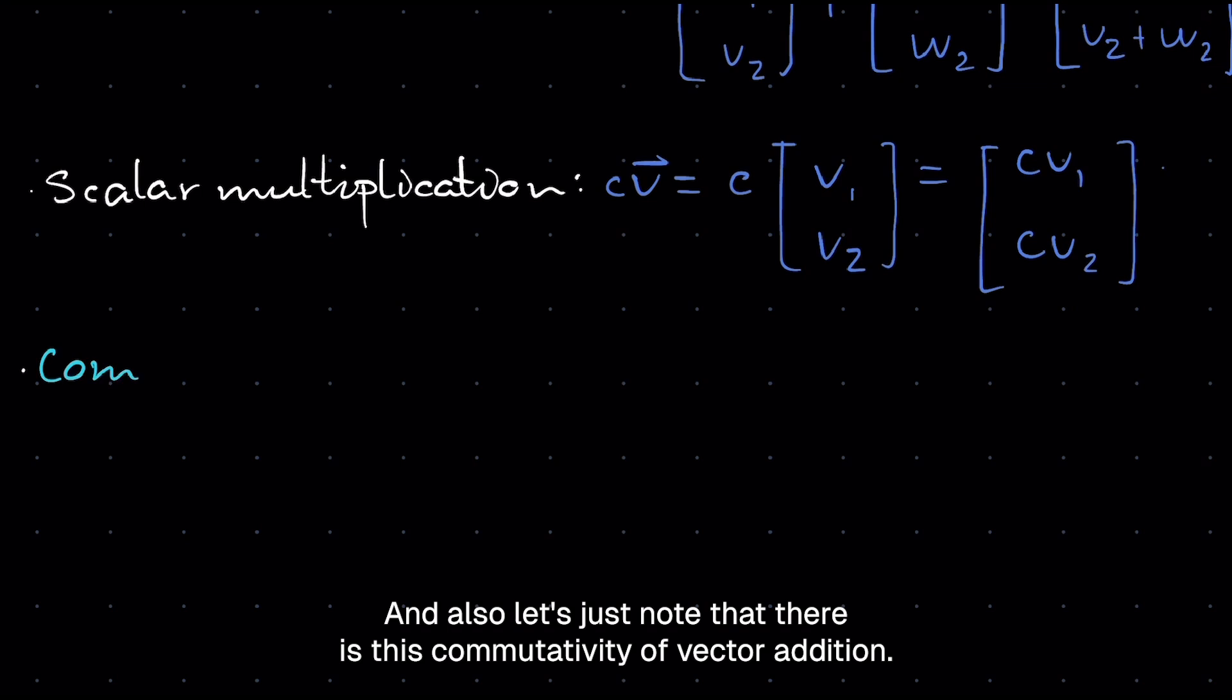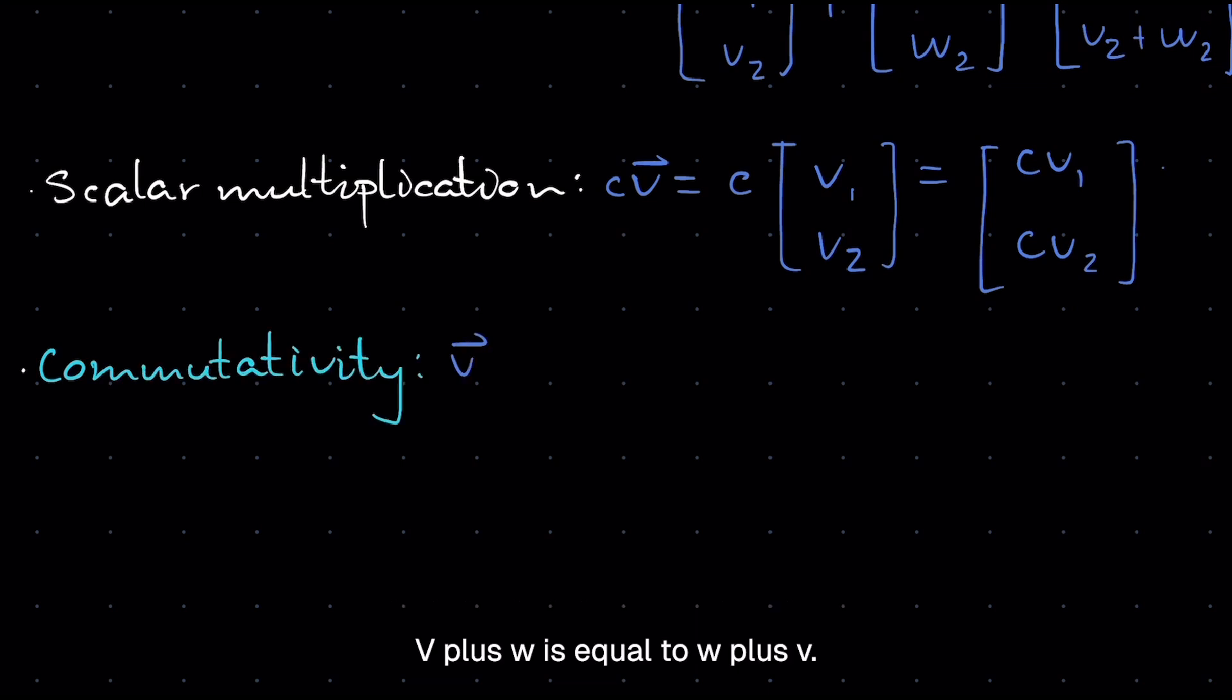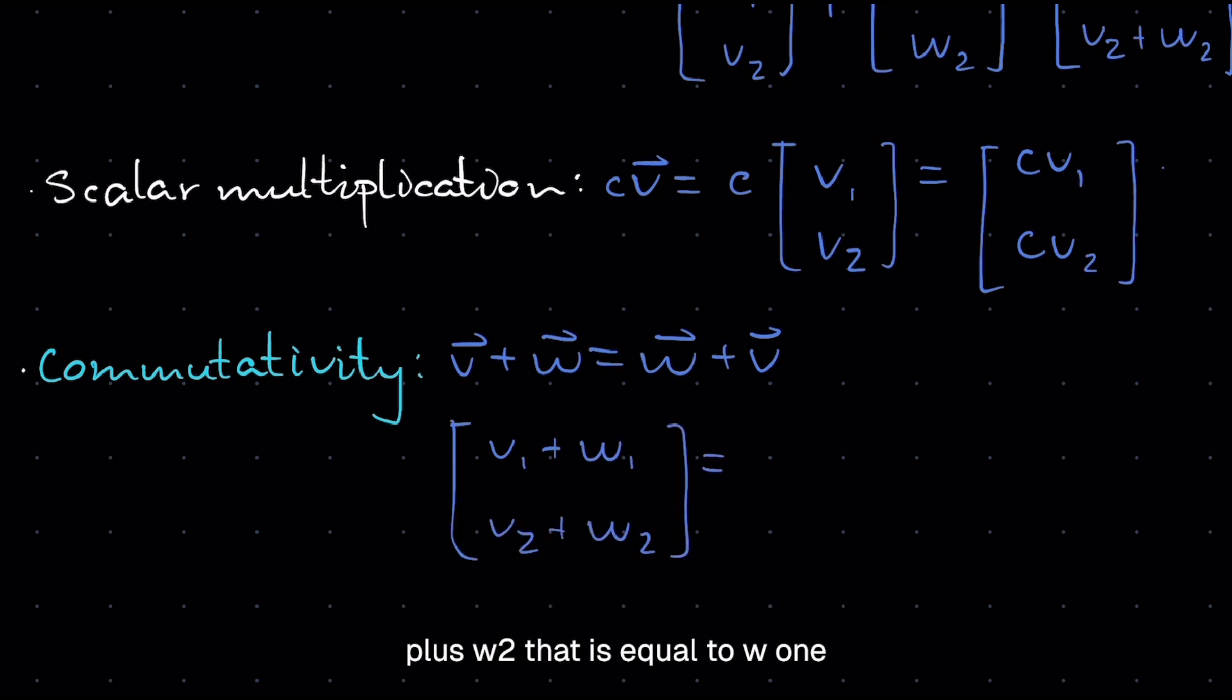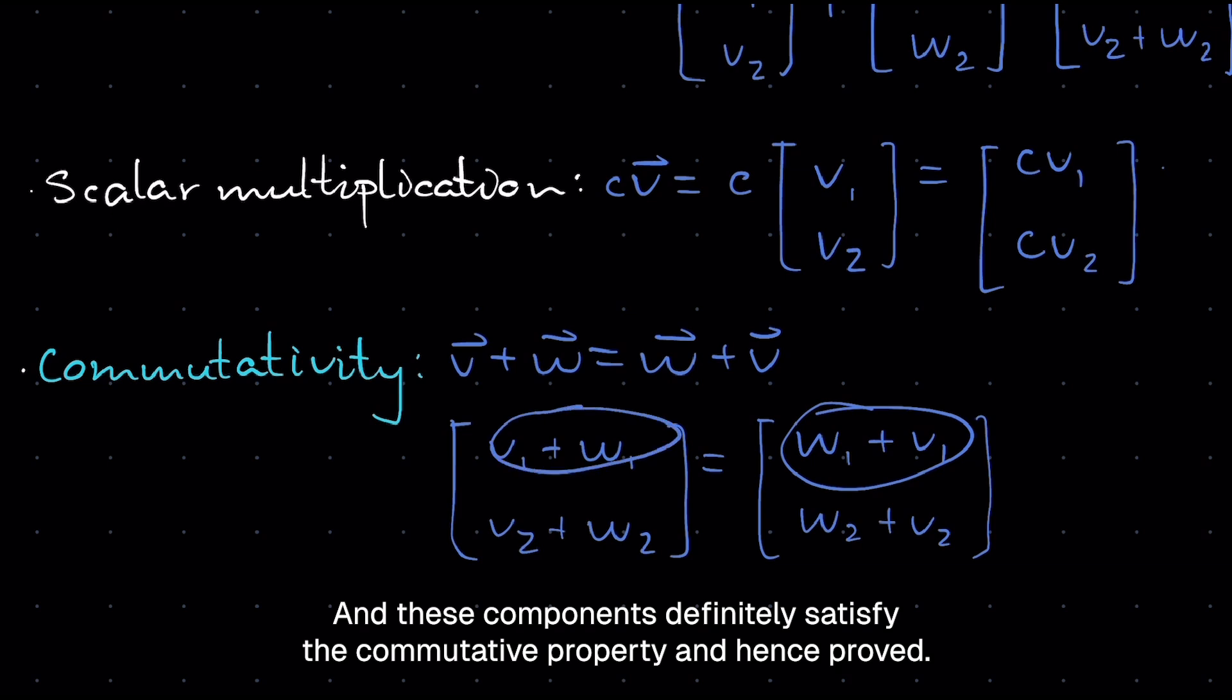And also, let's just note that there is this commutativity of vector addition. V plus W is equal to W plus V. And you can prove that basically by listing out that V1 plus W1 and V2 plus W2 is equal to W1 plus V1 and W2 plus V2. And these components definitely satisfy the commutative property and hence proved.